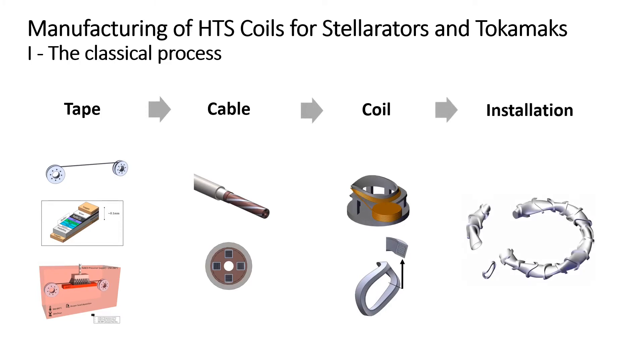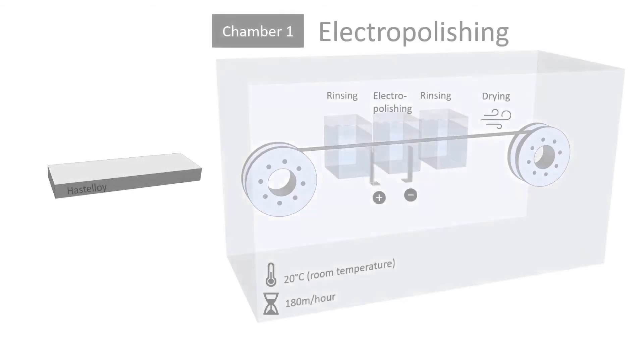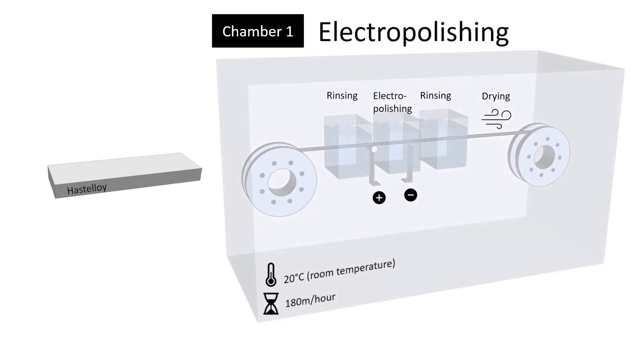The high-temperature superconducting tape fabrication process starts with the electropolishing of a metallic substrate, usually Hastelloy, in an acid bath to a surface roughness of around one nanometer.